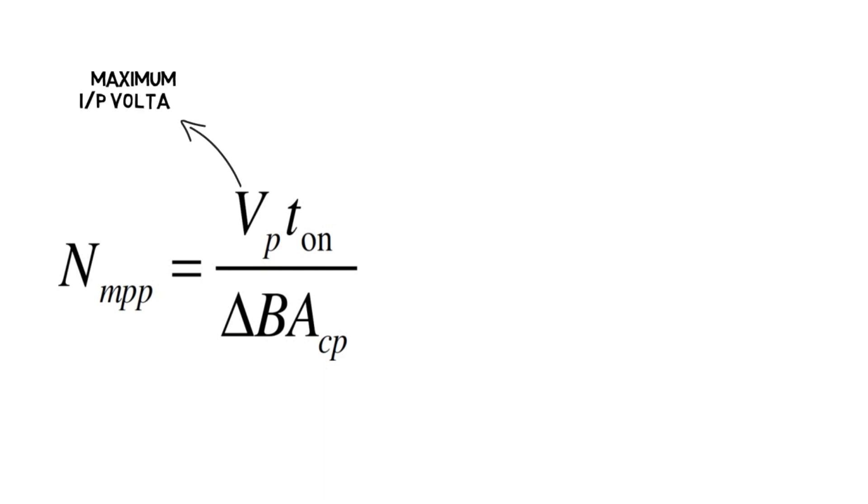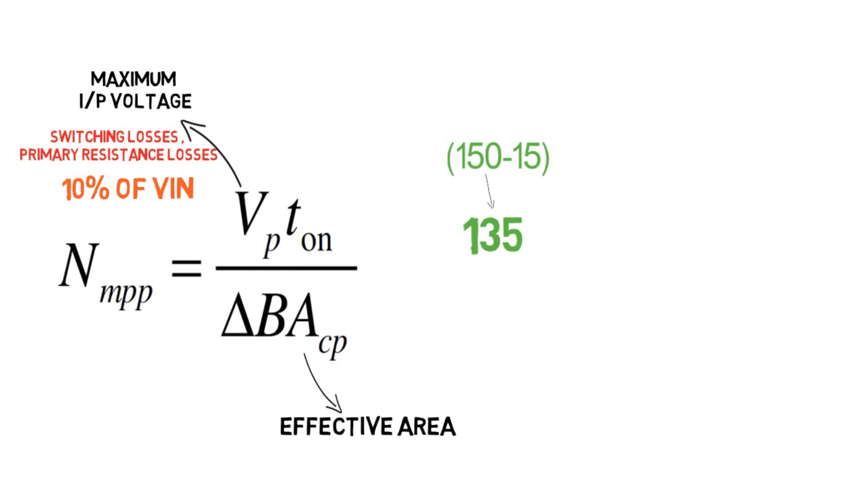For calculating primary number of turns, the formula is shown where VP is maximum input voltage which is voltage coming to the primary side of the transformer. For primary side we have to consider switching losses and primary resistance losses. Let's consider them as 10% of input voltage, hence we get VP as 135 volts. ACP is effective area of the core which is given by the manufacturer in the Cosmo Ferrites catalog. For E4012 core it is 118 mm square. T_on is the on time in which the transistor remains switched on, that is also decided by the designer. Here we'll put it as 50% of the total time.